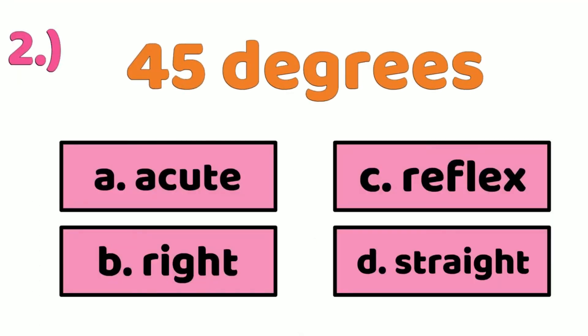Number 2 is 45 degrees. 45 degrees is acute angle. It is less than 90 degrees. Number 3,